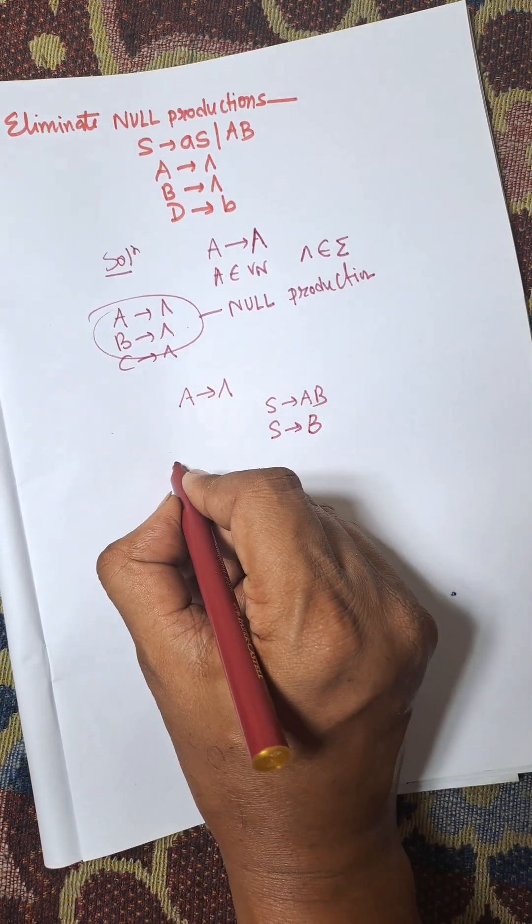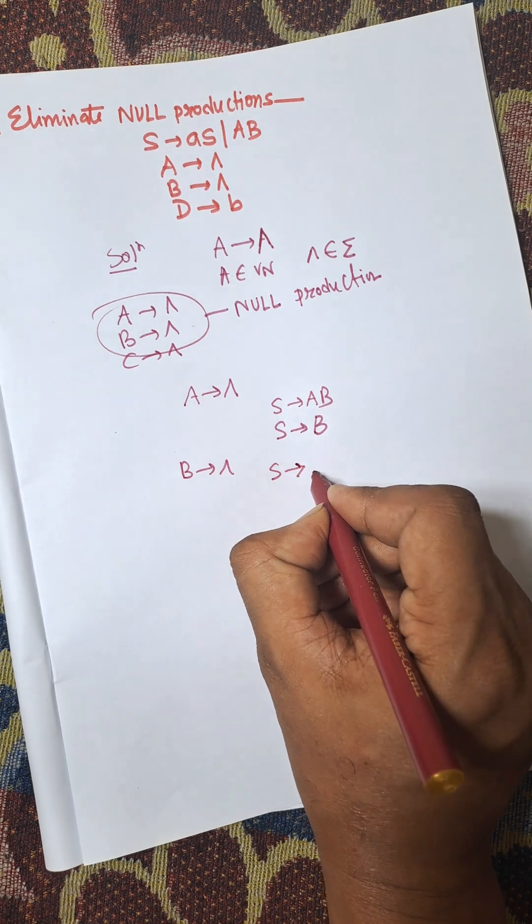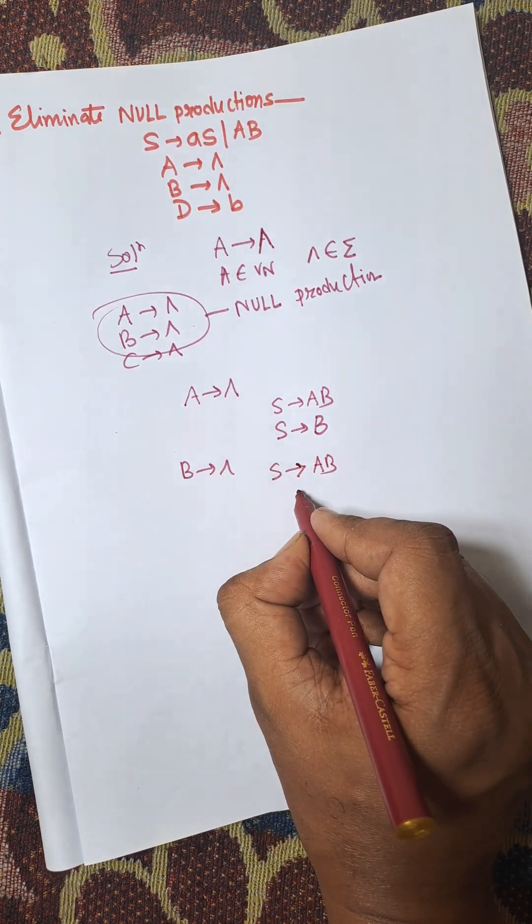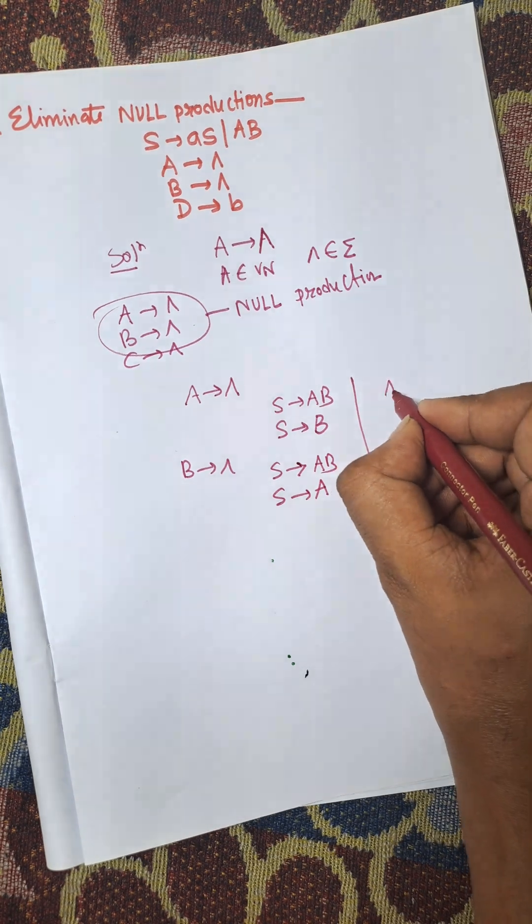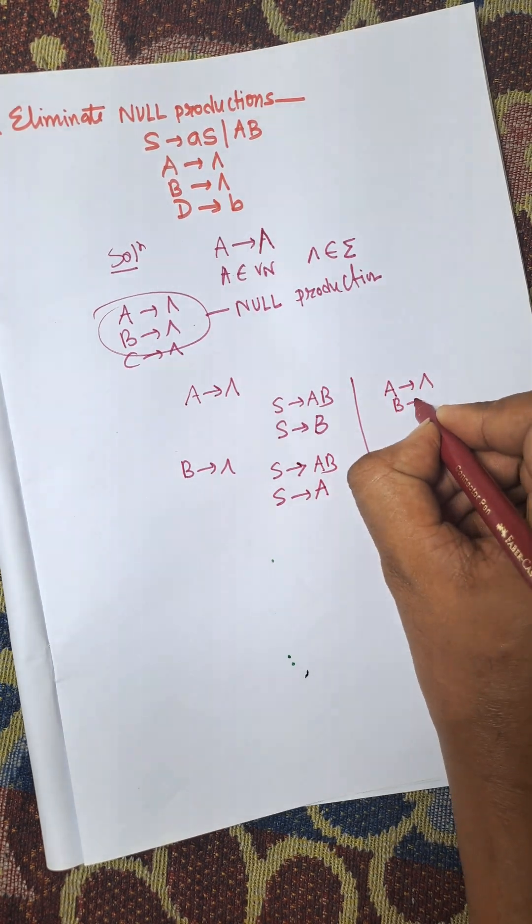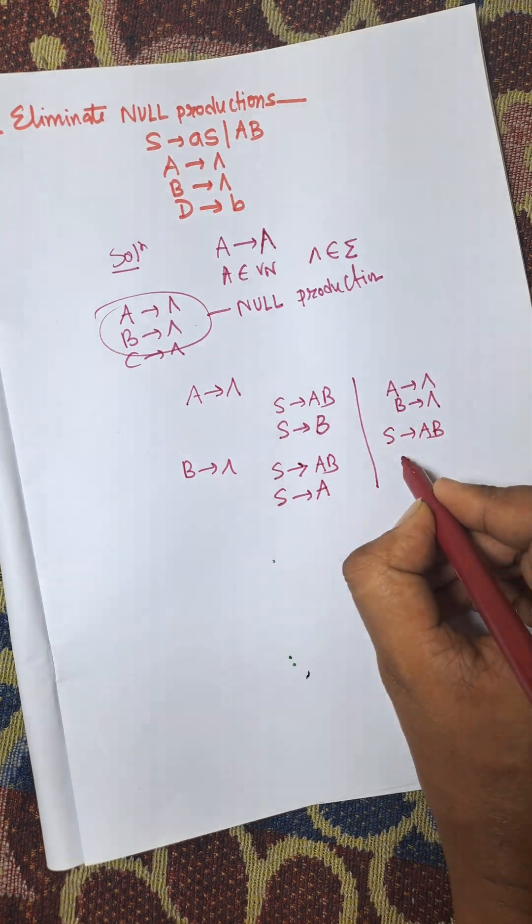Similarly, B arrow empty means when S is to AB, putting the value of B to empty, we will get S to A. When A arrow empty and B arrow empty both are applied for the production S to AB, then we will get S to empty.